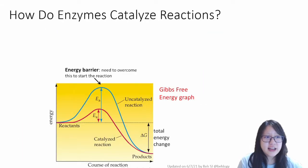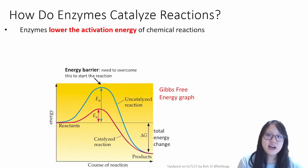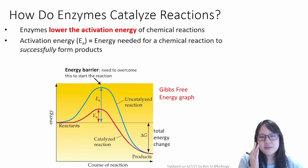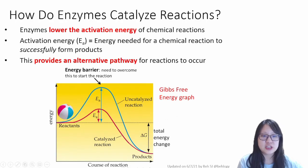How do enzymes catalyze reactions exactly though? Enzymes lower the activation energy of chemical reactions. Activation energy should be something you have heard of already. Activation energy is basically energy needed for a chemical reaction to successfully form products. It's usually illustrated here in the Gibbs free energy graph.